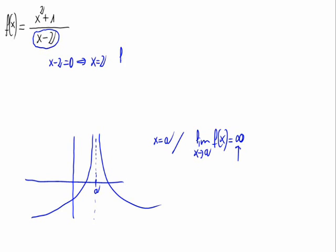So, to know if there's a vertical asymptote in x equals 2, we have to calculate the limit of f of x when x approaches 2. This is the limit of x squared plus 1 divided by x minus 2 when x approaches 2.